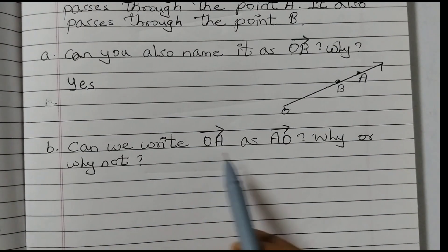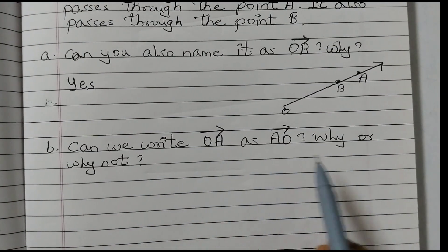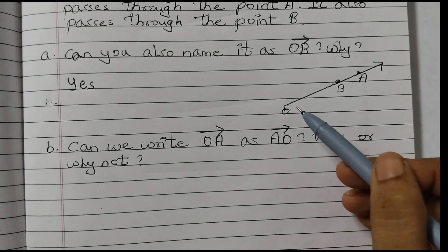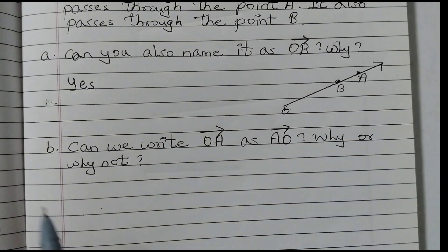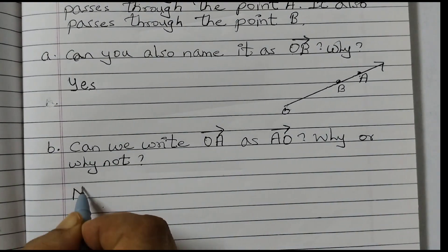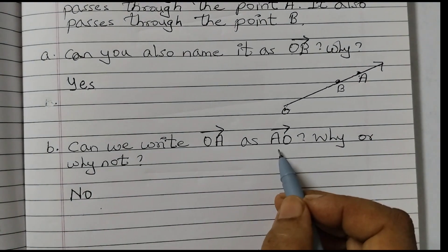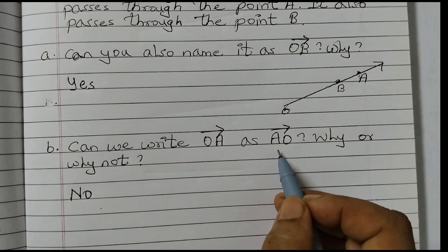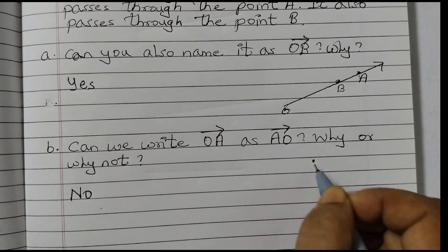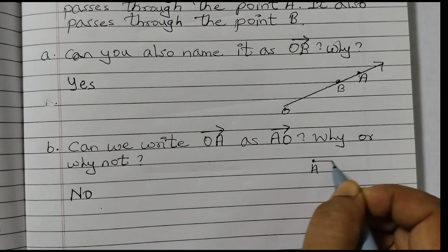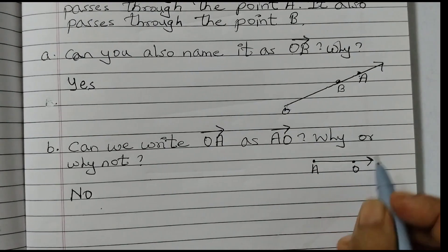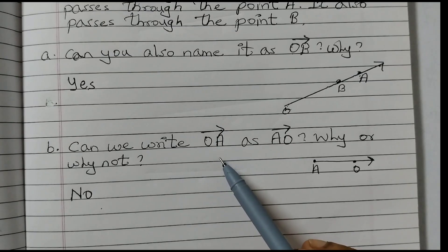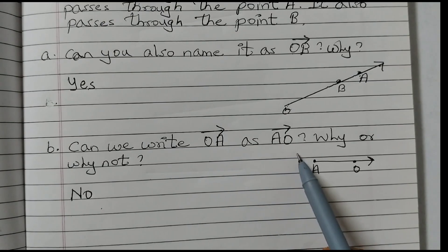Can we write Ray OA as Ray AO? Why or why not? So this is Ray OA. And they are asking that can we write this as Ray AO? So the answer is no. We cannot write it because A is the starting point. So if you want to show AO, A should be the starting point. And then you draw a Ray like this. This O should be on the path of this Ray. We cannot write Ray OA as Ray AO.